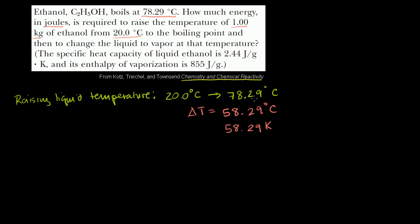If you added 273 to each of these numbers, you would have the Kelvin temperature. But then if you take the difference, it's going to be the exact same difference. Either way you do it, 78.29 minus 20. So that's how much we have to raise the temperature.